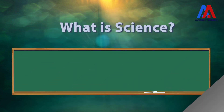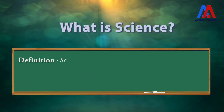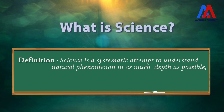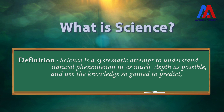Let me now define science. Science is a systematic attempt to understand natural phenomena in as much depth as possible and use the knowledge so gained to predict, modify or control phenomena. By science, first of all we know the laws of nature and then we try to see how we can take advantage of those laws.